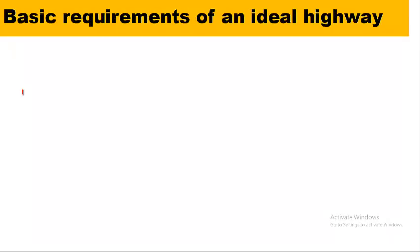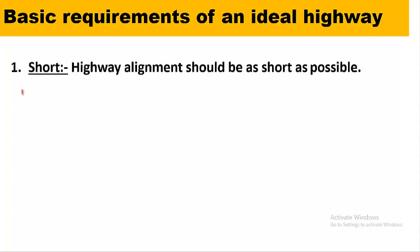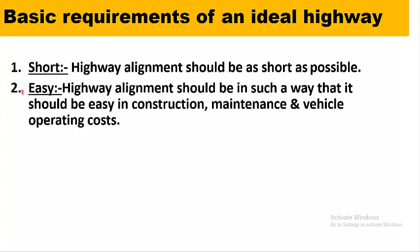Before getting to the point of why roads deviate from a straight path and why curves are given, one must understand the basic requirements of an ideal highway. First, it should be short — the highway alignment should be as short as possible. Second, it should be easy — the alignment should be easy in construction, maintenance, and vehicle operating cost.